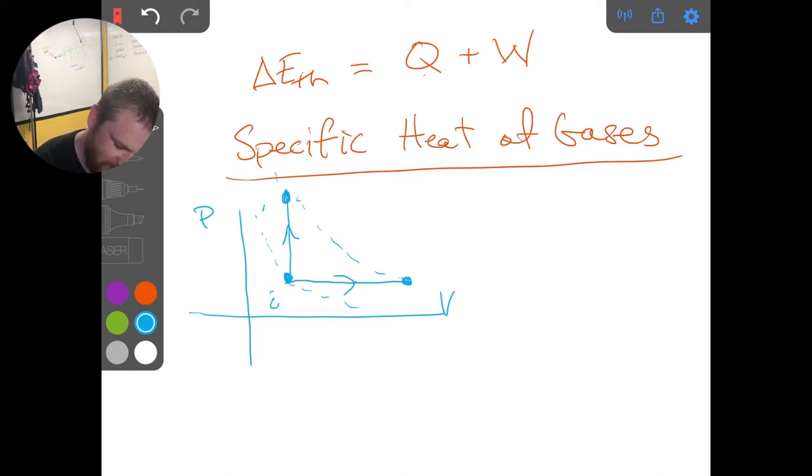So we have initial, and then we have process A, which goes the isochoric route, and we have process B, which goes the isobaric route. And so both of these, since they have the same initial and final temperature, they're going to have both path A and path B are going to have the same change in the thermal energy, because that only depends on the temperature if we don't have a phase change involved.